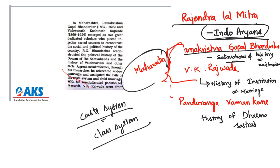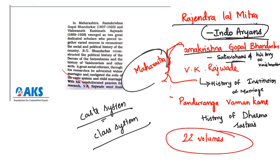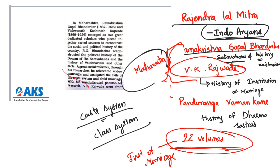VK Rajwade published around 22 volumes based on all the research he did through those manuscripts. His most notable work was on the history of the institution of marriage, which is still considered a classic today because of its solid base in Vedic and other texts and the author's insights into the stages in the evolution of marriage.